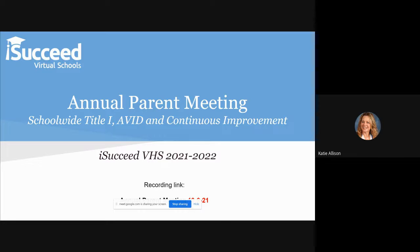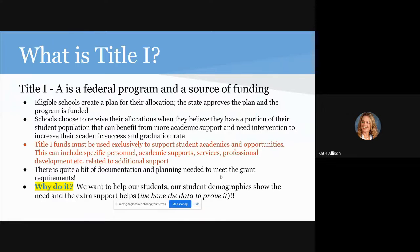I'm going to get you through these slides and try to do a good translation of federal programs language. Oftentimes, just like state and federal legislation, it can be pretty cumbersome. So Title I-A is a federal program and it's a source of funding for schools. Eligible schools can receive this money from the federal government, but there are a lot of qualifications that need to happen for a school to be able to get the funds.